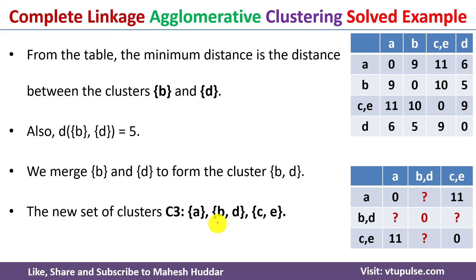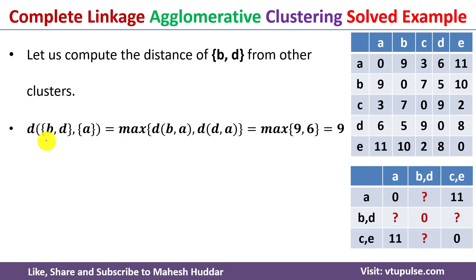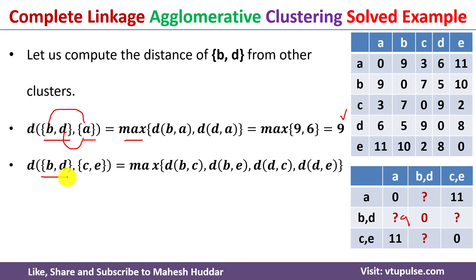After merging we get only three clusters: one cluster is A, another is BD, and the third is CE. Again we don't know the distance from cluster BD to A or to CE, so we need to use the maximum distance formula. The distance between cluster BD and A is equivalent to the maximum distance between B-to-A and D-to-A. The maximum between 9 and 6 is 9, so the distance from BD to A is 9.